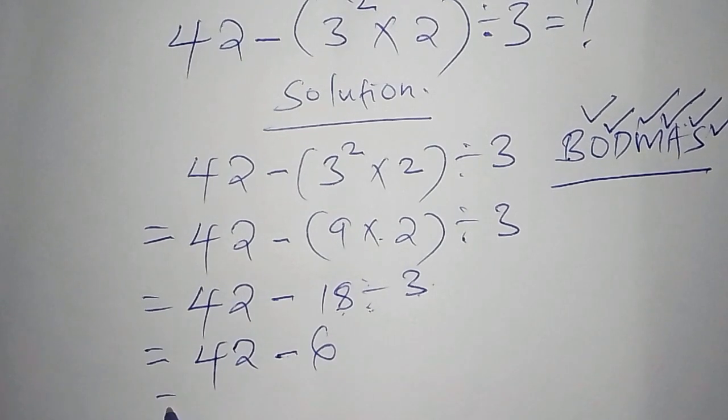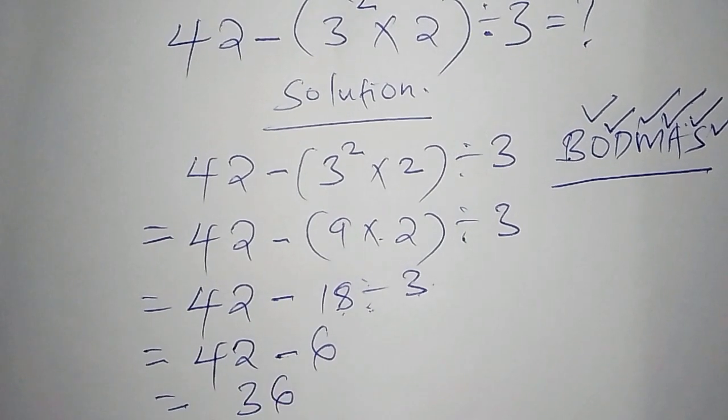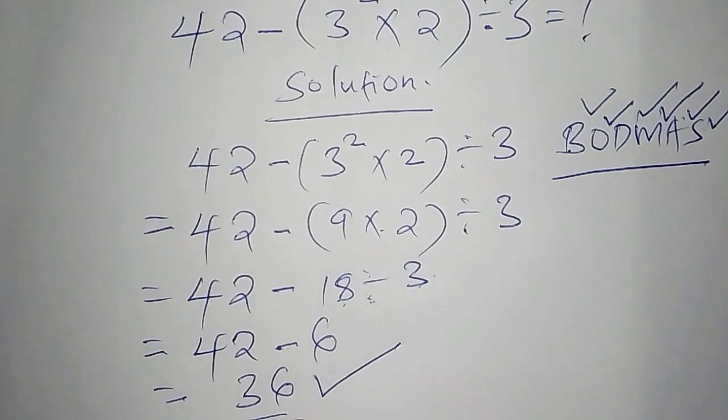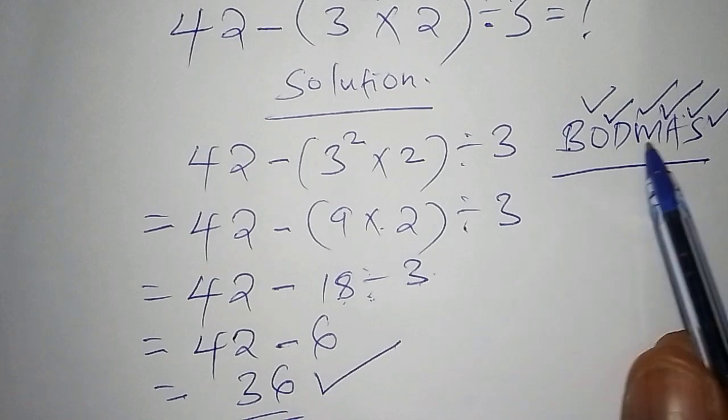So 42 minus 6. Our answer is 36. Now 36 becomes the correct answer. That is how we work out this math problem involving order of operations.